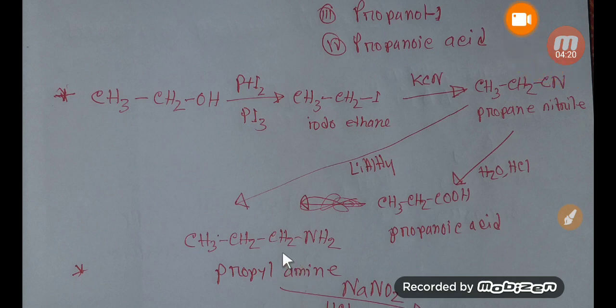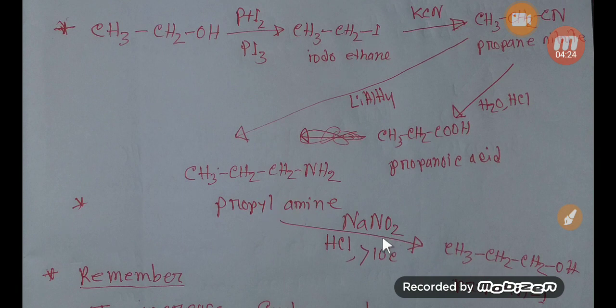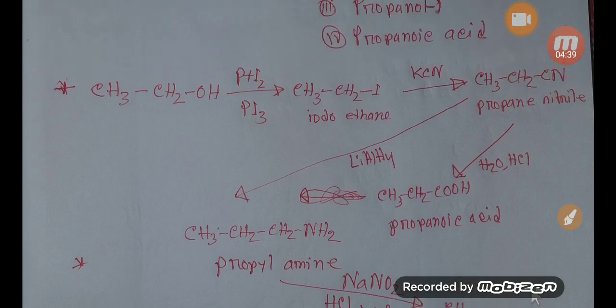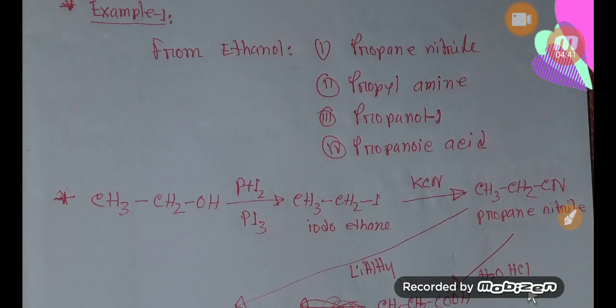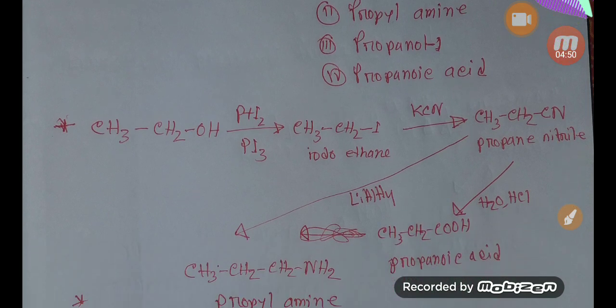If you add here nitrous acid (HNO2), which will come from sodium nitrite (NaNO2) and HCl, then this NH2 group will be converted to OH group, that is alcohol group, and you will get propanol. So now you can convert ethanol to propanenitrile, propylamine, propanol, and propanoic acid.